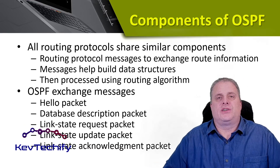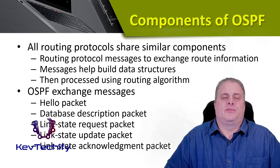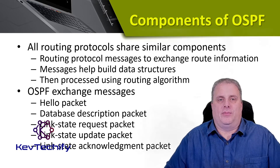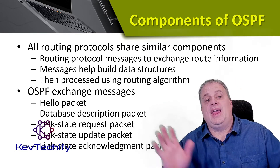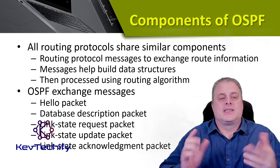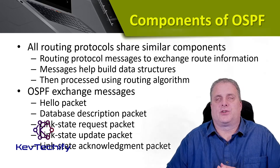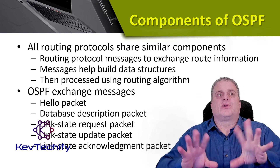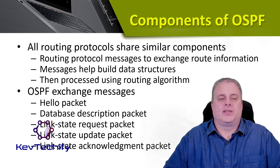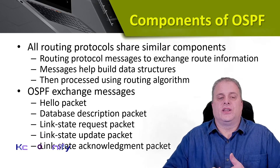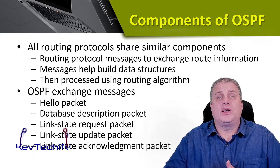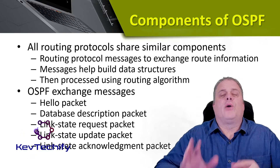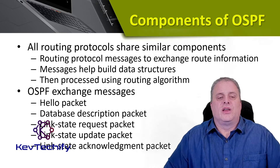OSPF exchanges five different types of messages. The first message is a hello packet — basically it says, hey, I'm here. The second type is the database description packet, which describes what our database looks like. The third is a link state request, where a router asks about the status of a specific link.